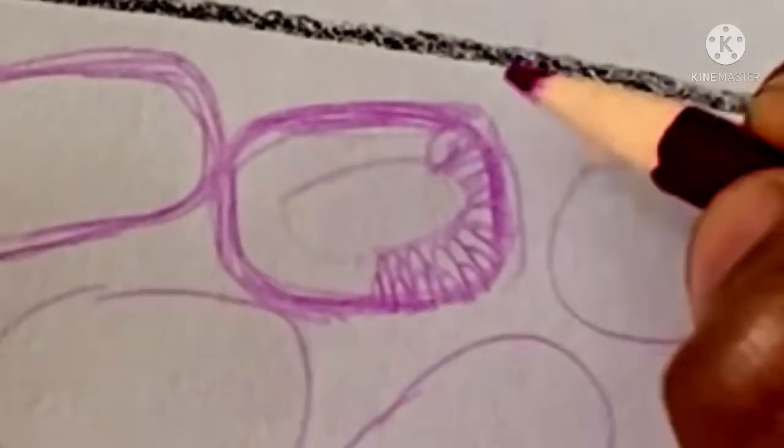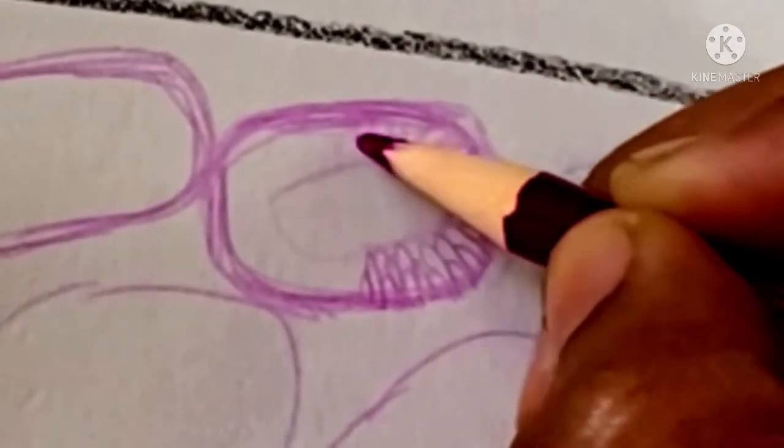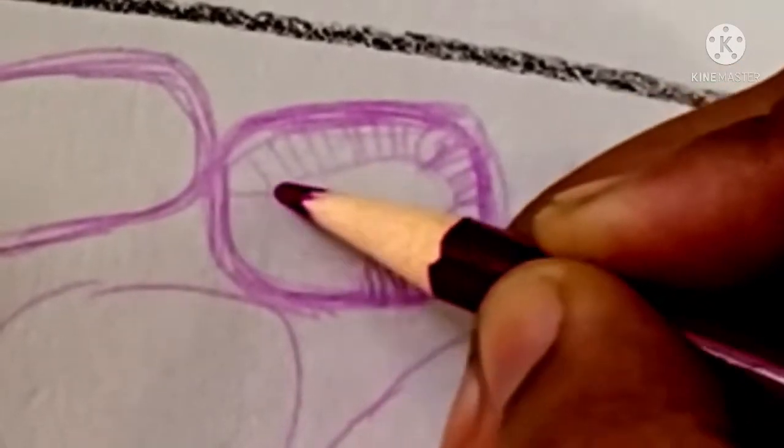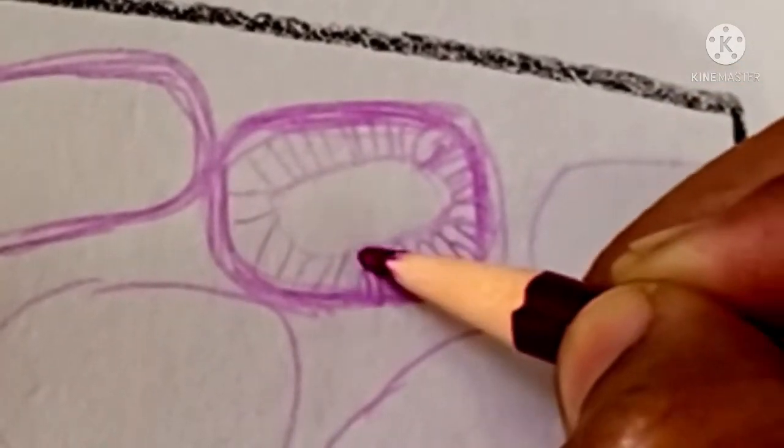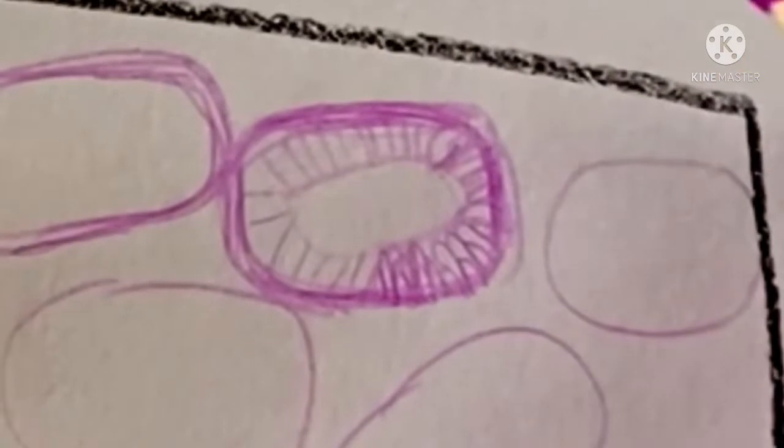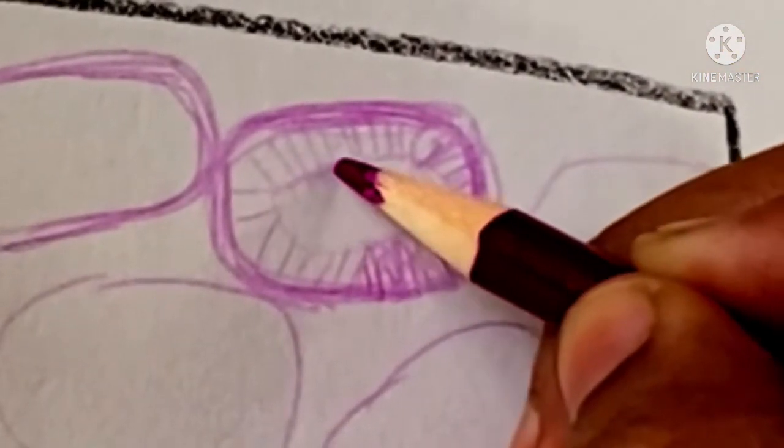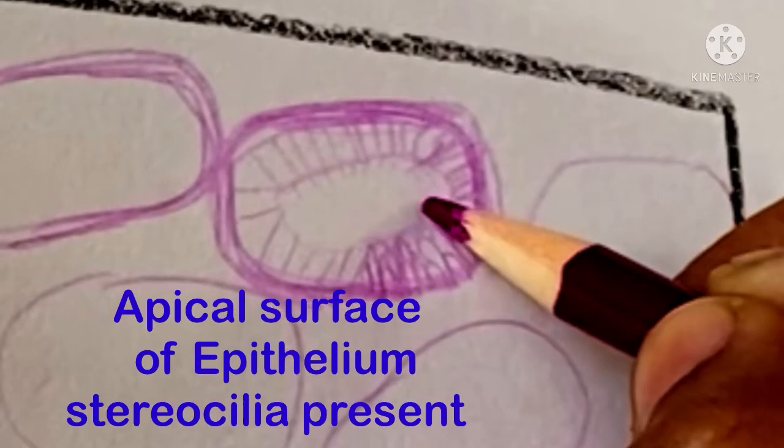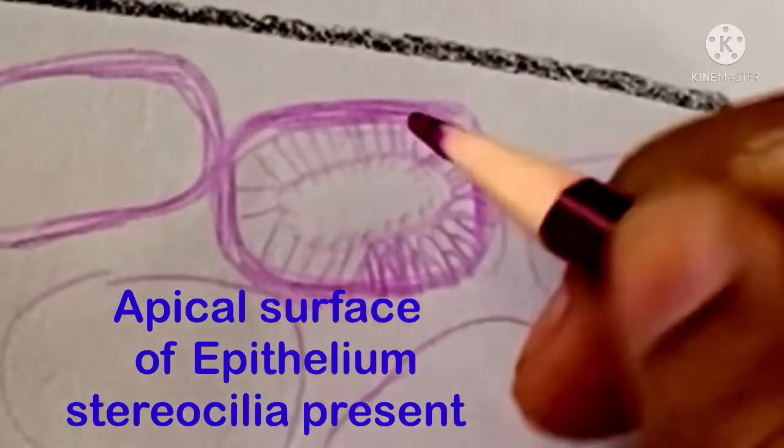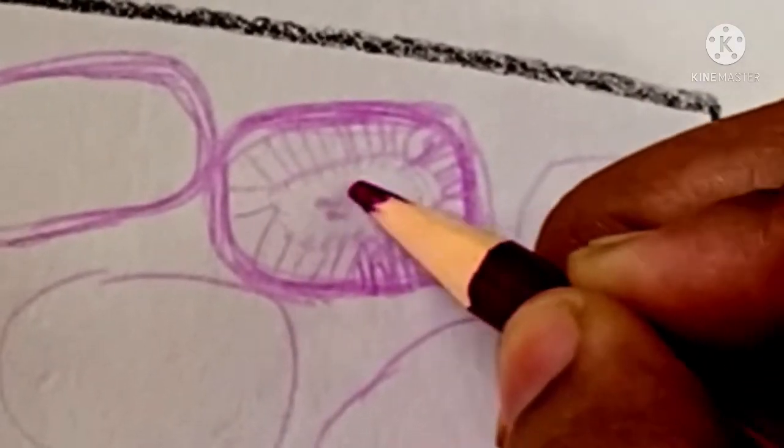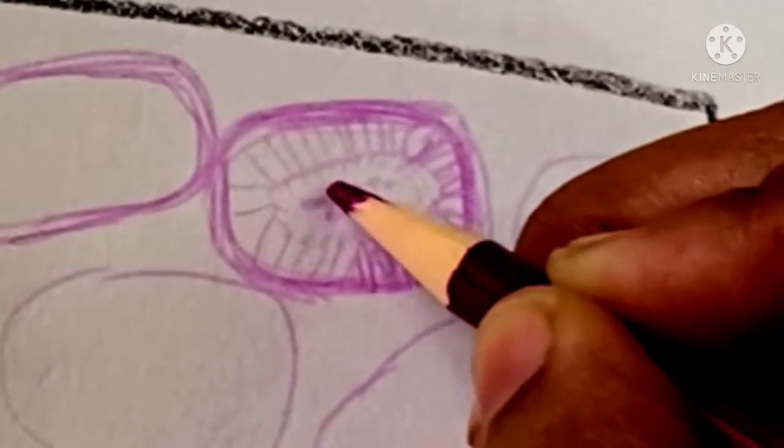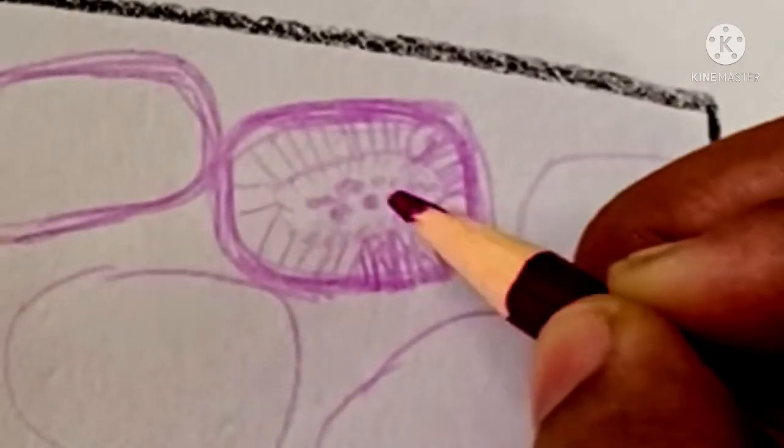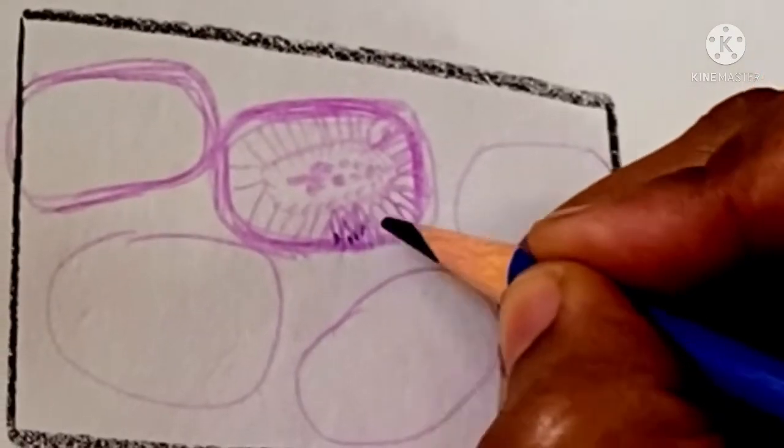Within the epididymis, the sperm are stored, mature, and acquire the capacity to fertilize the ovum. The distal or tail segment stores the sperm where they mature and become motile.